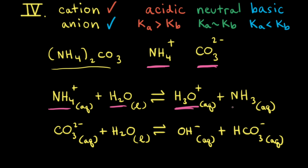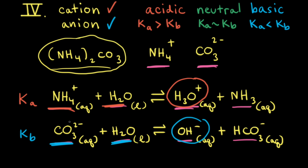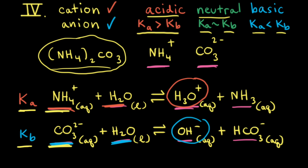When the carbonate anion reacts with water, that is anion hydrolysis, forming hydroxide ions and hydrogen carbonate. Since cation hydrolysis forms hydronium ions, the equilibrium constant for that reaction is Ka. Since anion hydrolysis forms hydroxide ions, the equilibrium constant for that reaction is Kb. To figure out if the aqueous solution of ammonium carbonate is acidic, neutral, or basic, we need to compare the Ka value for ammonium to the Kb value for carbonate. If Ka is greater than Kb, the solution is acidic. If Ka and Kb are approximately equal, the solution is neutral. If Ka is less than Kb, the solution is basic.